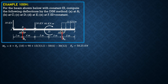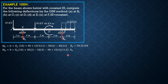And summation of moments about B equals 0: RE times 10 plus 30 times 2 minus 50 times 4 minus 90 plus 15 times 3 times 11.5 equals 0. Note that 10 plus 1.5 is 11.5. So RE equals 74.75 kN.